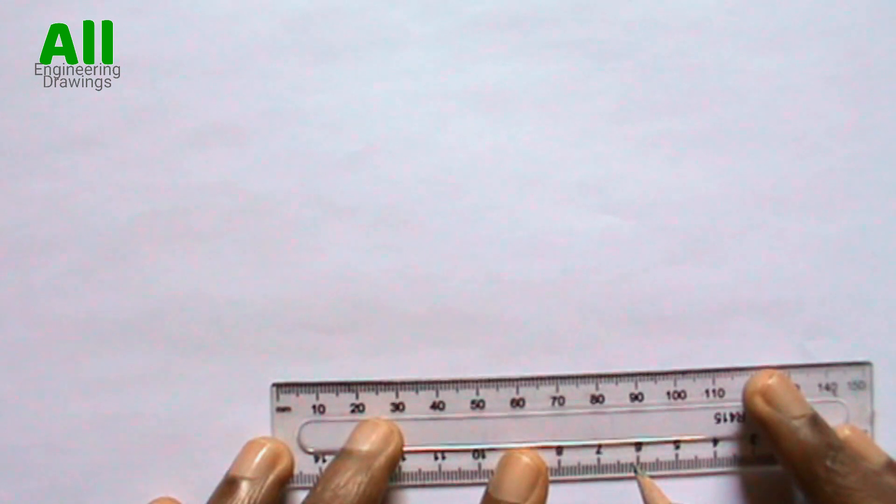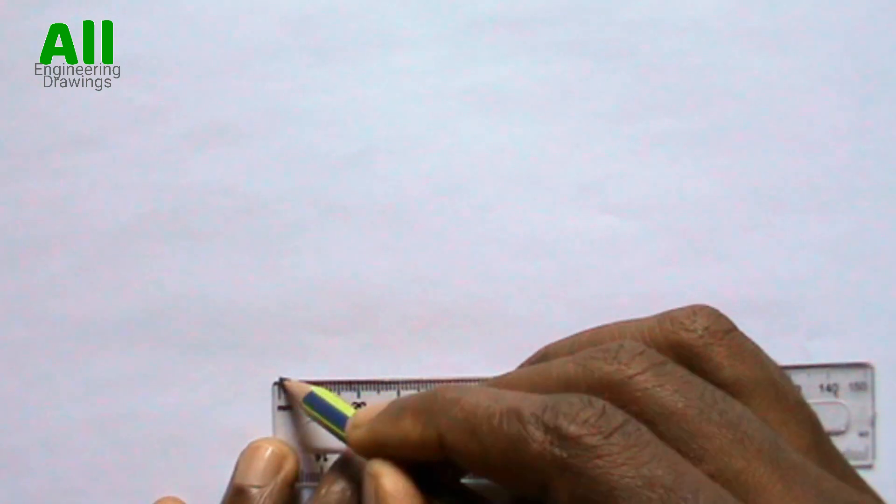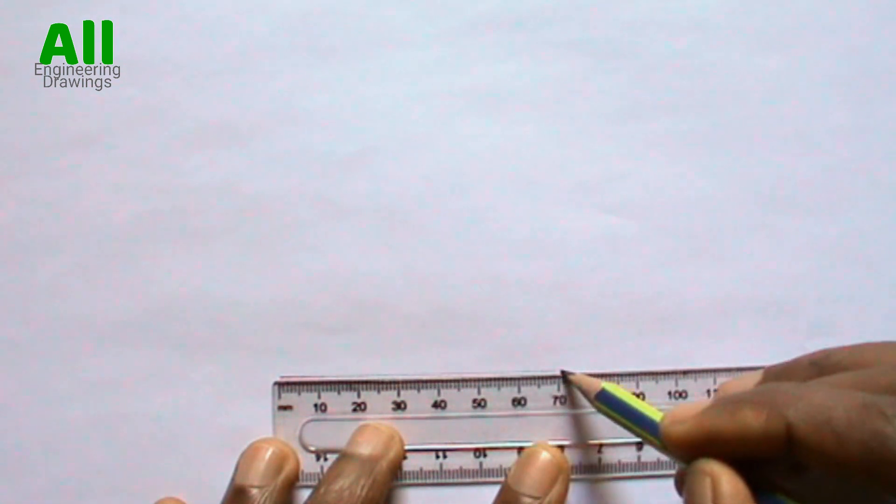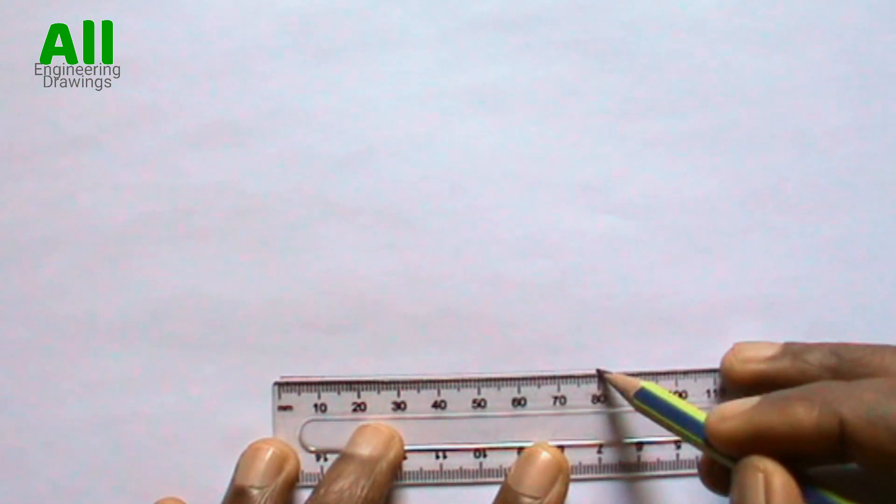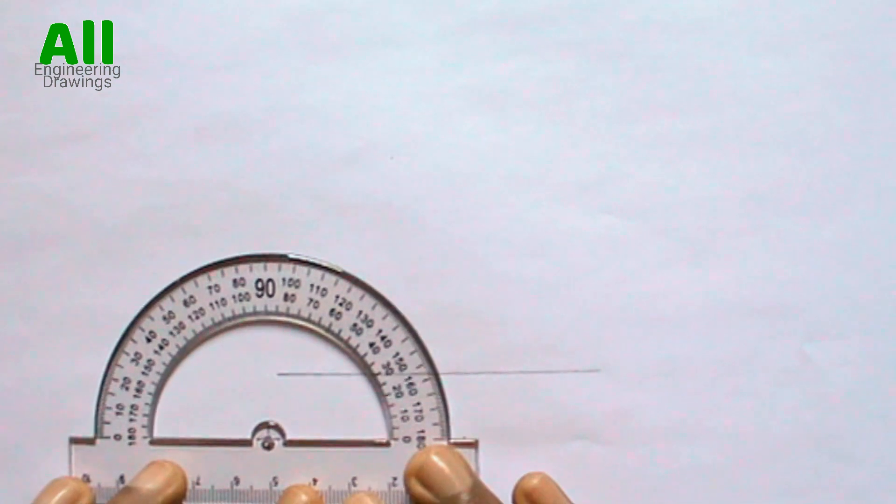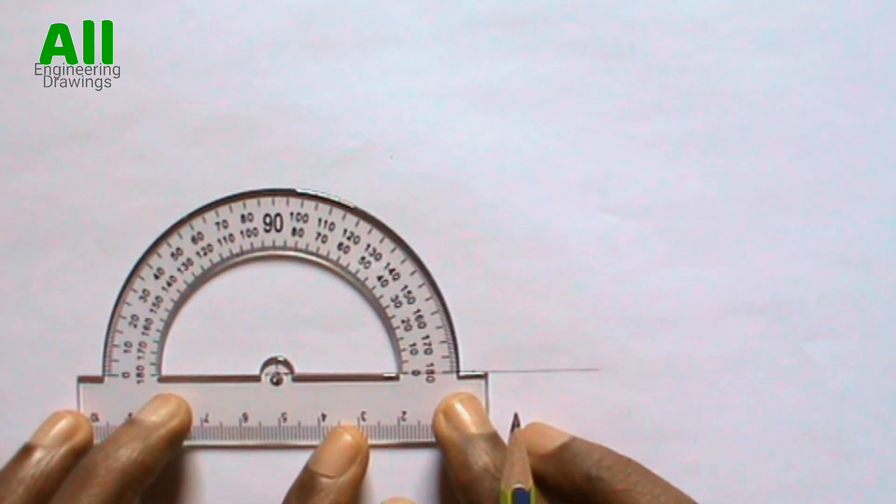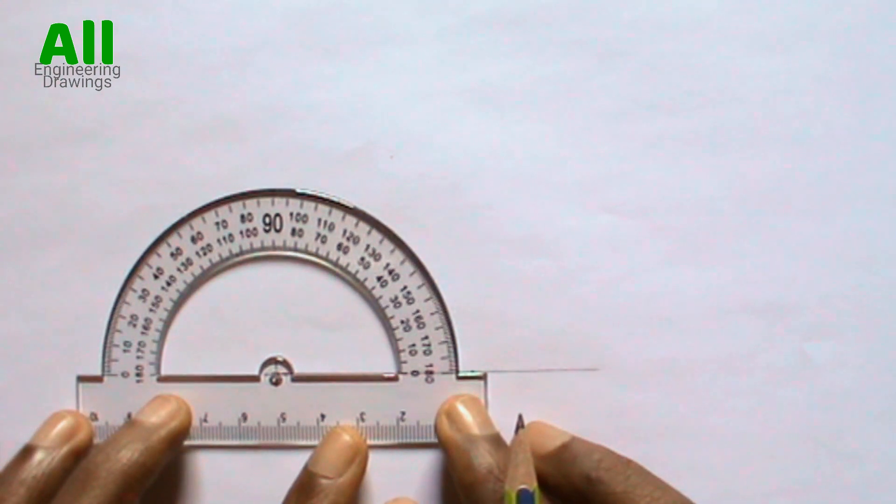To draw an angle, you have to first draw the first line. Then you have to place your protractor at one end of the line. You have to properly set the protractor.